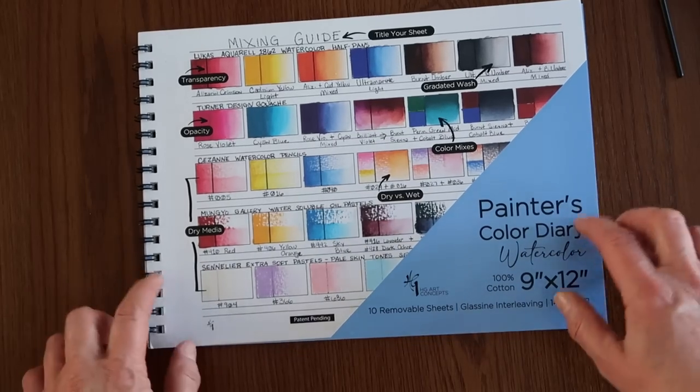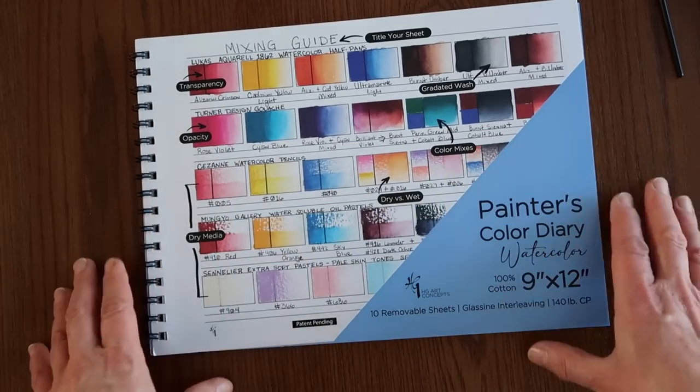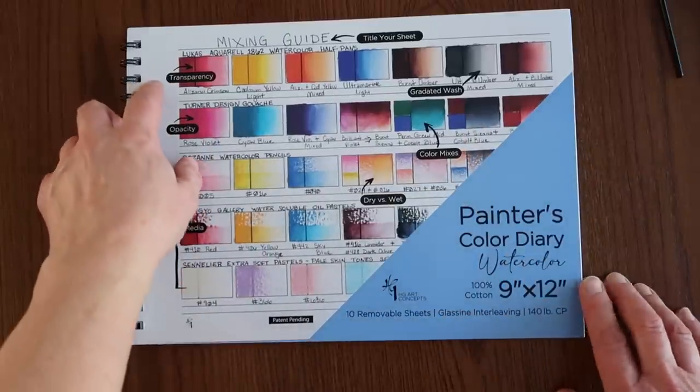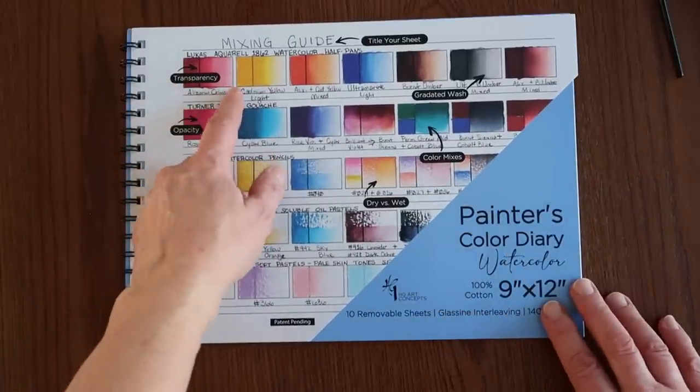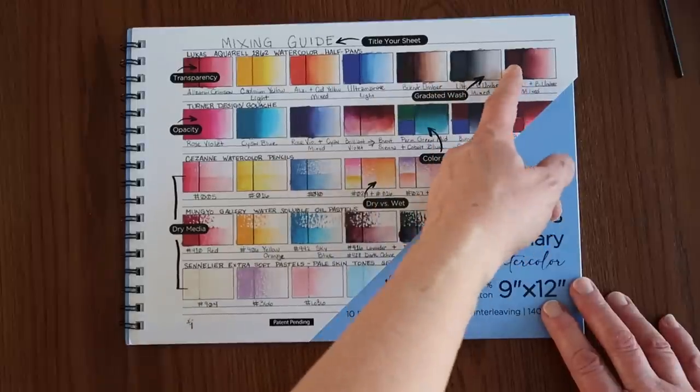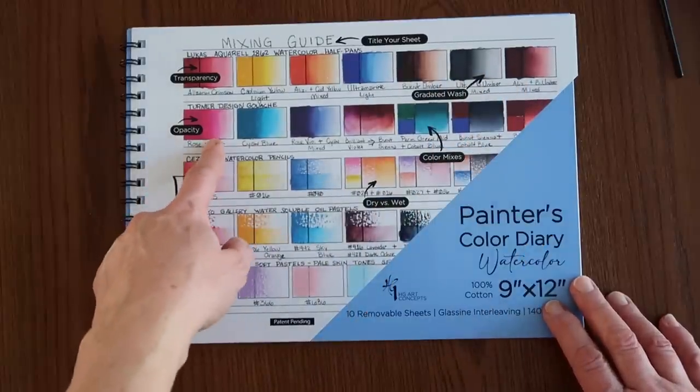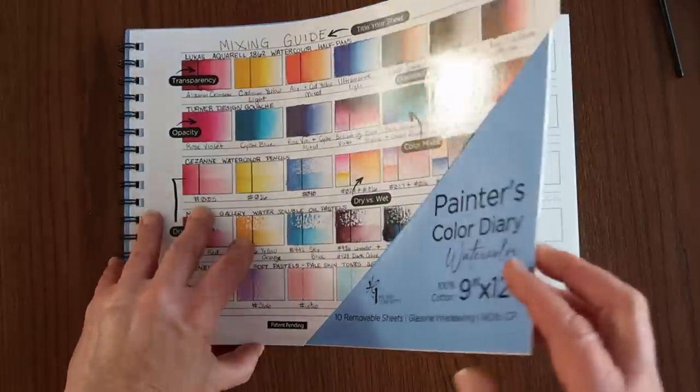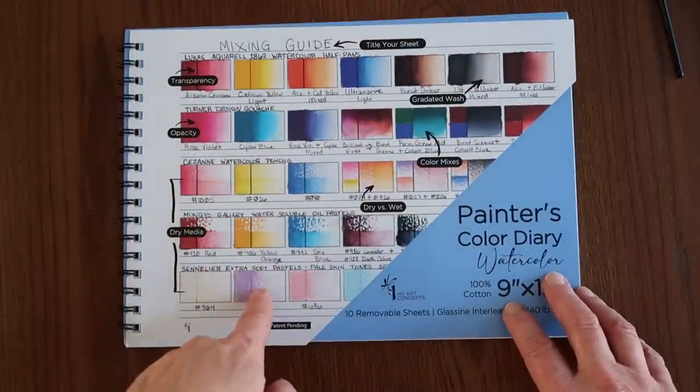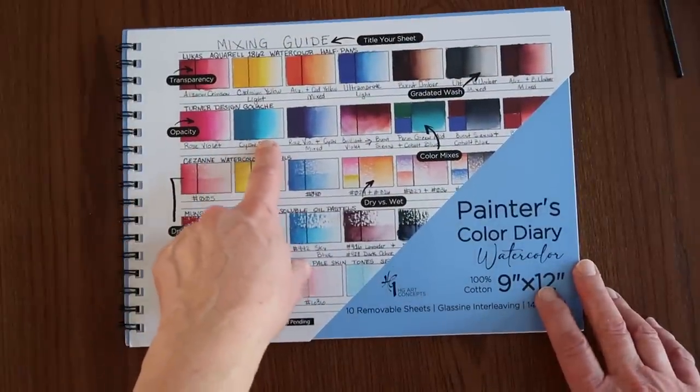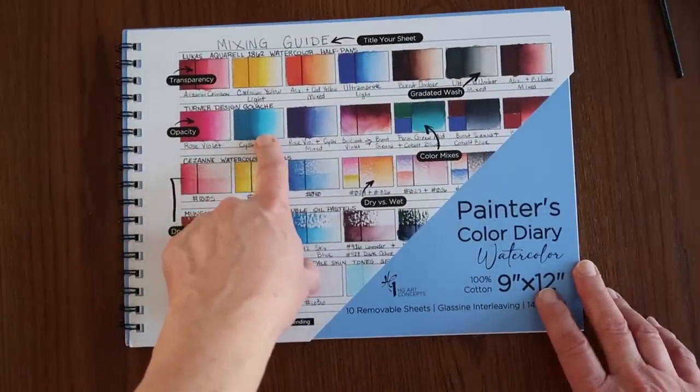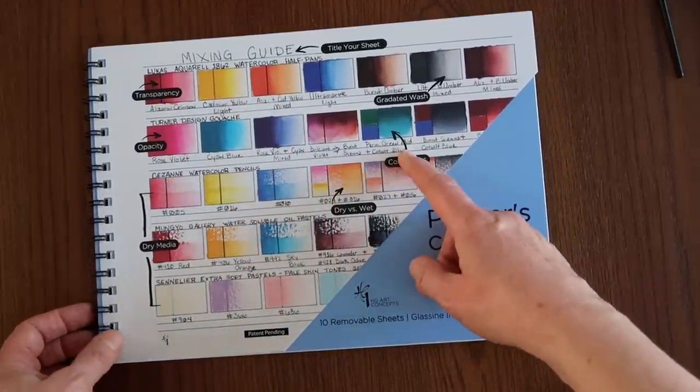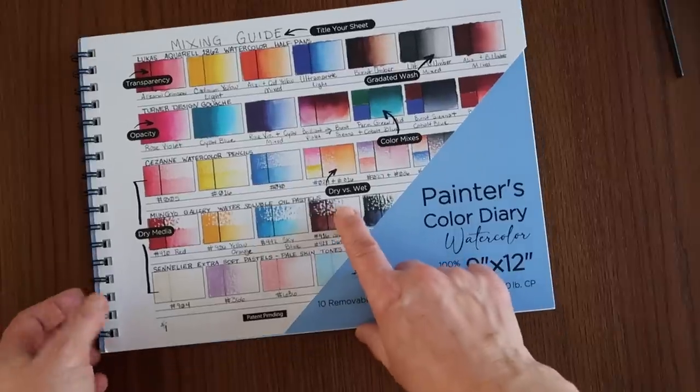Now first off, it kind of is a little bit busy on the front. There's a lot going on. It tells you that you can see the transparency of the paints. You can do a graded wash. It'll show you the opacity because there's a line that's printed down the page. So you can see if your paints are going to be more opaque or more transparent. And you can do color mixes.